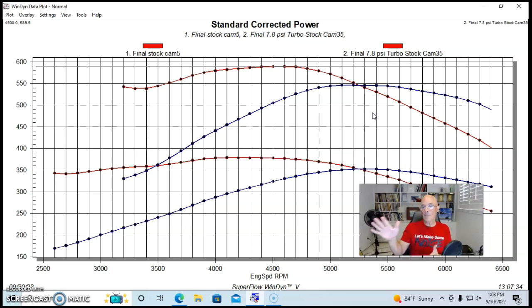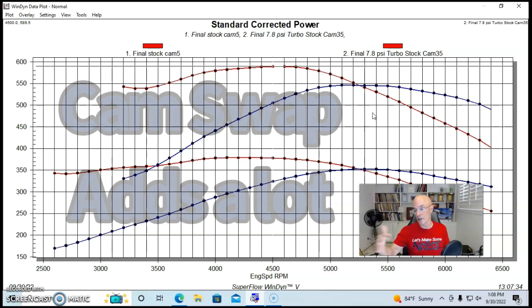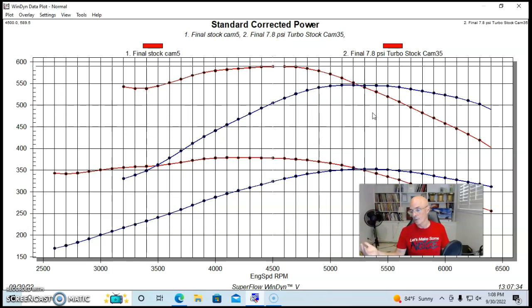So if we put a camshaft in this and bring our stock power up from 350 to over 400, 420, 430, 440, somewhere in that range, we'll make even more power under boost at every given boost level. So the gains that we pick up 60, 70 horsepower or whatever, naturally aspirated are now going to turn into 120, 130, 140 horsepower under boost.